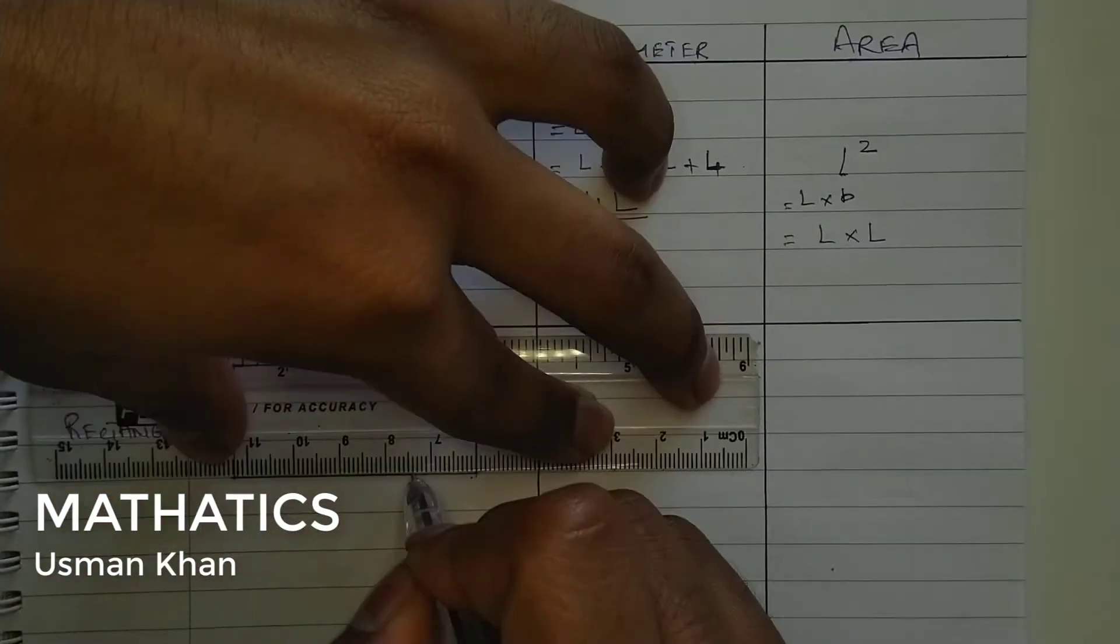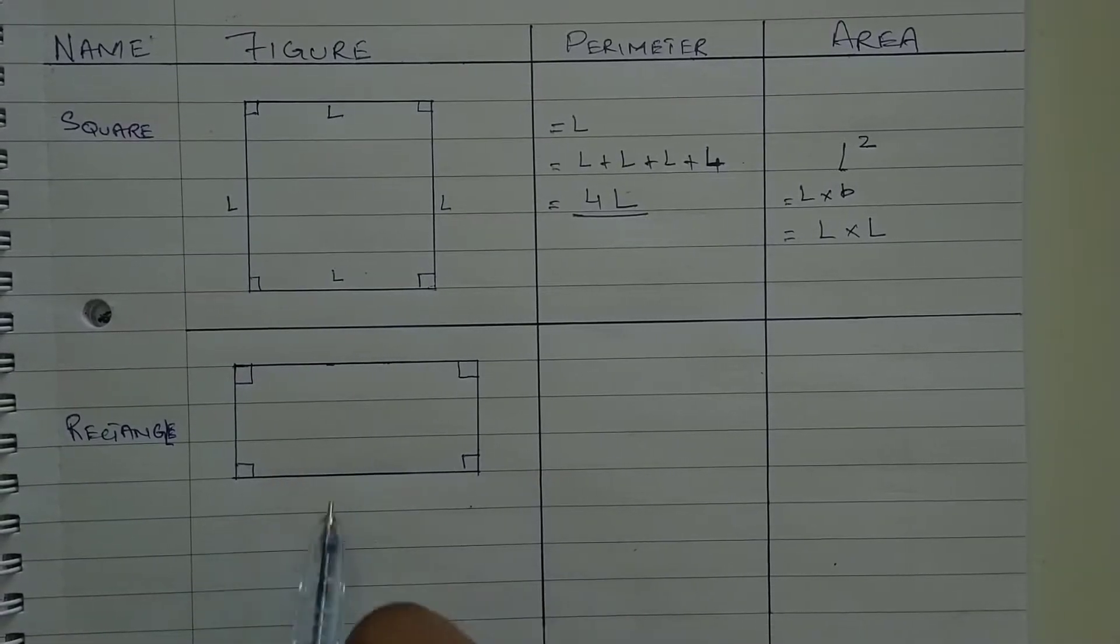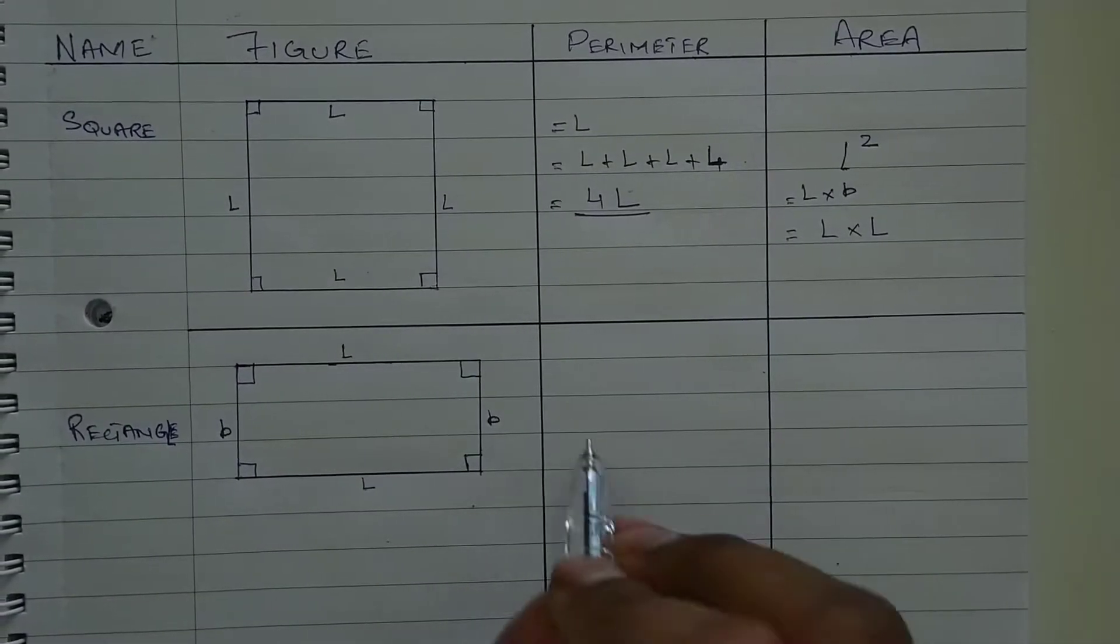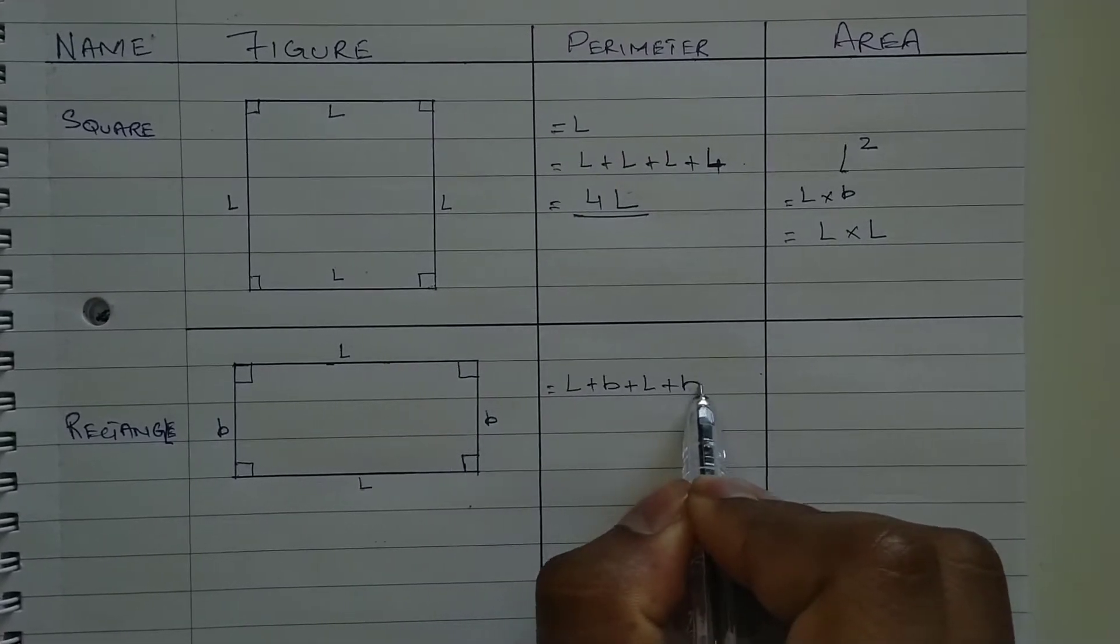We have rectangle. A rectangle is a shape with opposite sides of equal length. The formula for perimeter being sum of all sides. We have length plus breadth plus length plus breadth.